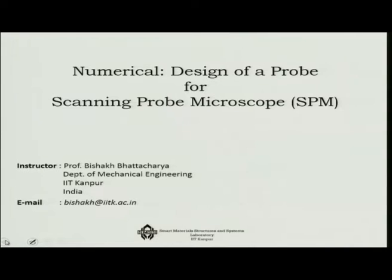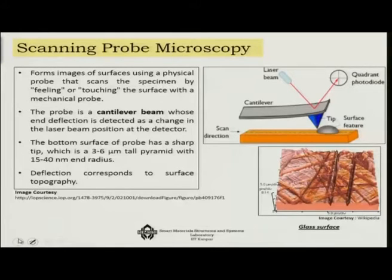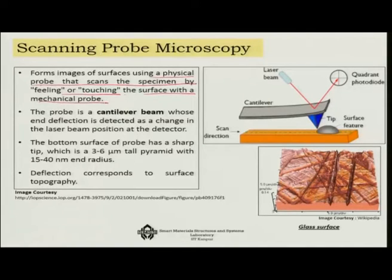Today we are going to do one more case study on the design of a probe for a scanning probe microscope. Essentially, it is only the probe part of a scanning probe microscope we have selectively chosen, and we will see how we can select the material for this type of probe. Scanning probe microscopy is one of the most powerful imaging technologies available today, used for imaging surfaces using a physical probe that scans the specimen by touching the surface with a mechanical probe — like a cantilever probe with a sharp tip.